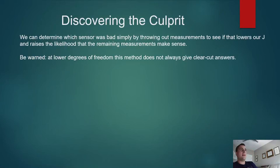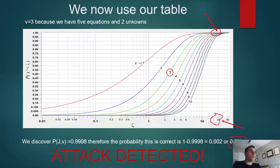Okay, well that's great, but now how do we discover who the culprit is? Well, it's actually pretty simple. We can determine which sensor was bad simply by throwing out measurements and seeing if that lowers our j. If it lowers our j, then it's likely that that measurement was the one that was messing us up. But as you can see by this chart, when you throw out measurements, you lose degrees of freedom. So now instead of operating on the three line, we're operating on the two line. If you don't have lots of redundant measurements, you won't get a clean answer often.